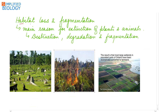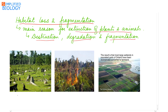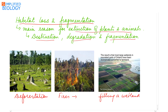Habitat loss and fragmentation is the main reason for extinction of plants and animals. Habitat loss can occur due to destruction, degradation, and fragmentation. Destruction includes deforestation, cutting down trees, forest fires, or filling a wetland — as seen in Ontario, where a large wetland was converted into farmland. Due to these reasons, the natural habitat of a species is either changed or destroyed.